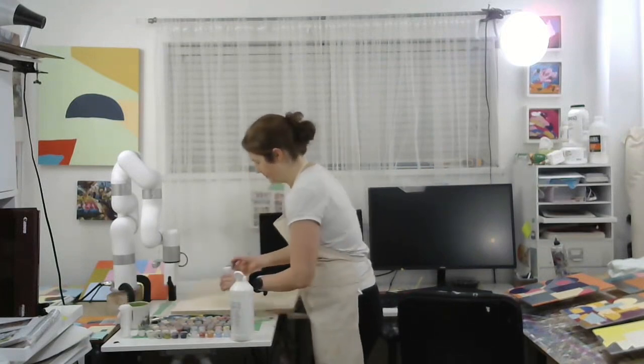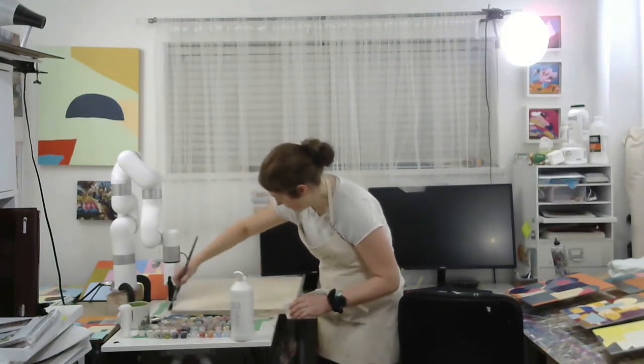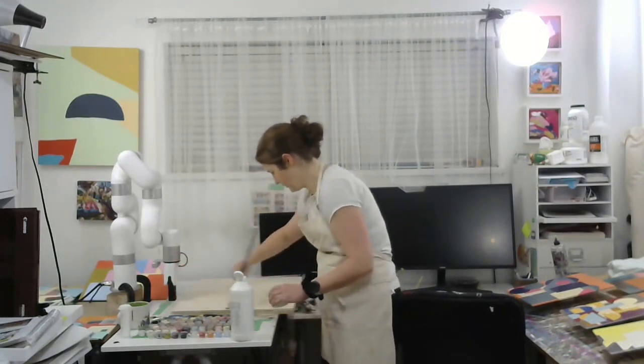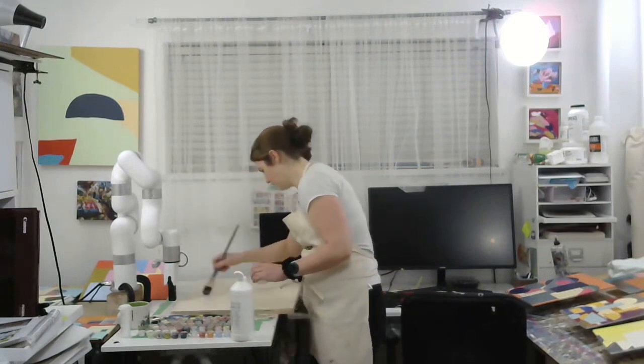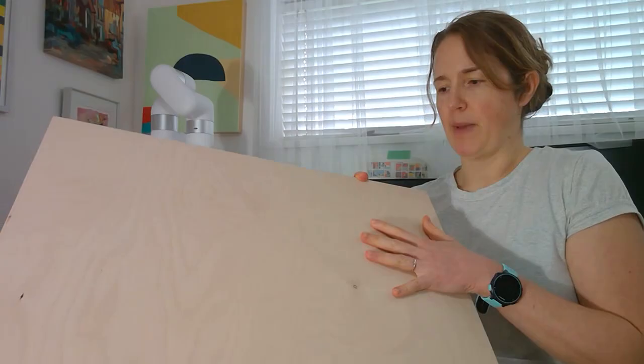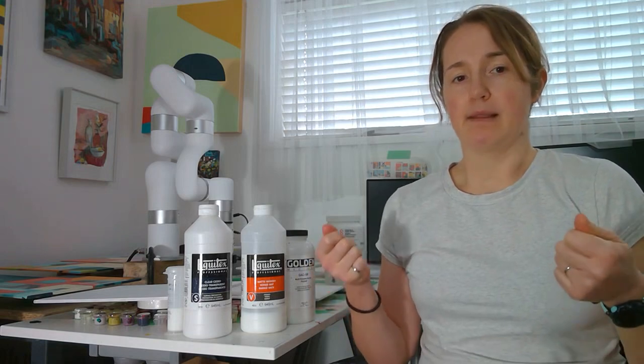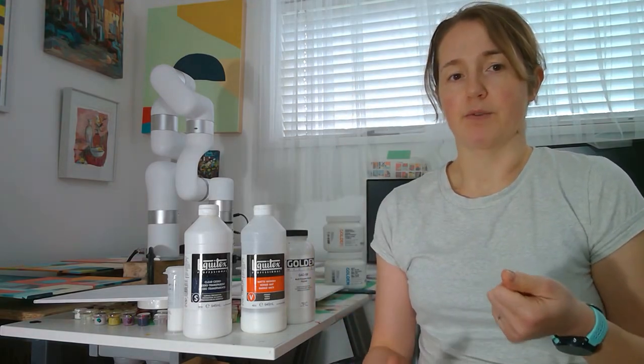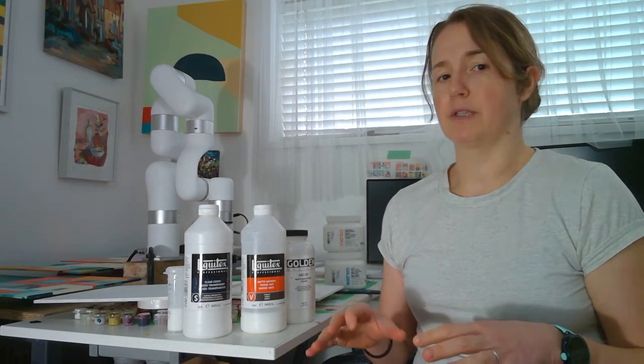What gesso does is it seals the surface so that your paint isn't absorbed by the wood. It seals it and prepares it for paint, but it also gives it a consistent tooth. Tooth means putting roughness to the surface so it can actually accept paint and the paint sits on top of the gesso. The other thing I like about gesso is sometimes I buy boards from different manufacturers and the smoothness of the panel or the different types of wood give a different consistency, so adding gesso actually makes it feel a little more consistent.